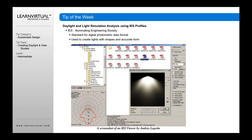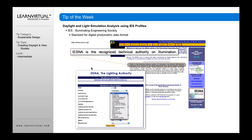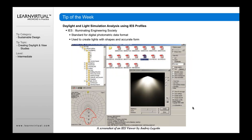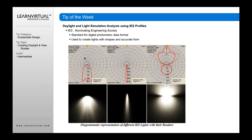In ARCHICAD, we have an IES object as part of the light or lamp tool, and you can assign IES information to lights and lamps in ARCHICAD, which is really quite powerful. You can go to a website such as iesna.org or to specific manufacturers' websites and download shapes of different types of lights. When you import that into ARCHICAD, it will show different characteristics of how that light illuminates — either directly in a spot or more globally in the room, depending on how the light is set up.